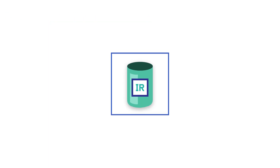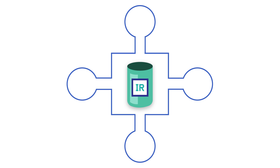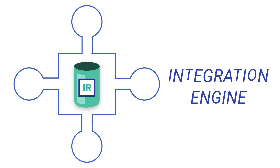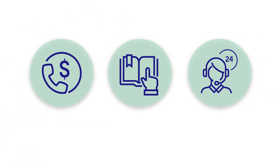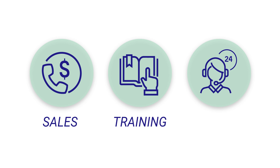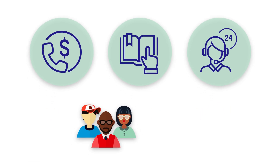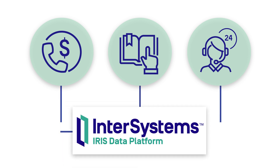Not only is InterSystems IRIS a unified database platform, it is also an open database platform. It includes a powerful and flexible integration engine that allows you to connect people, processes, applications, and systems. For instance, consider you have three different applications used by different user groups: a sales application that manages data for sales leads, a training application that manages training for both employees and clients, and a support application that manages support tickets and user profiles for clients. These applications have common users and common data, but they are separate applications. With InterSystems IRIS, though, they can be fully interoperable, sharing data and communicating with each other seamlessly.